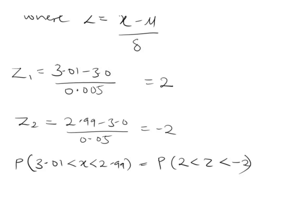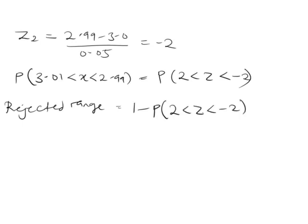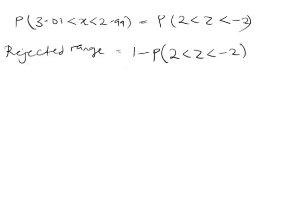We know that for the rejected range, it will be 1 minus the probability of the accepted range. So: 1 minus the probability that minus 2 is less than z less than 2. Let's draw the normal distribution curve to visualize this.